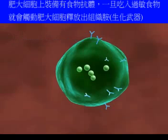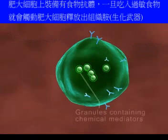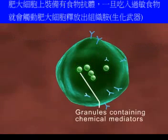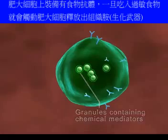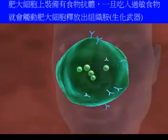These IgE antibodies sit on the surface of the mast cells. The mast cells have granules containing chemical mediators like histamine and prostaglandins, etc.